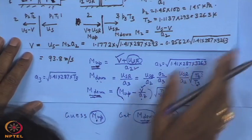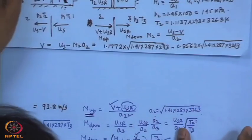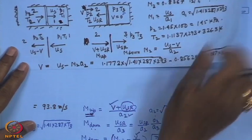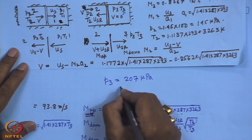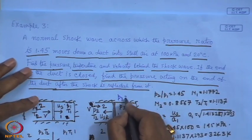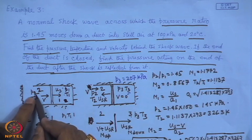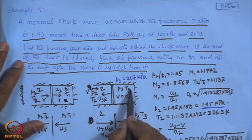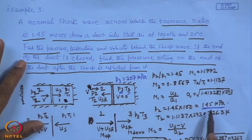Using this iterative procedure, the result is P3 = 207 kPa. So the sequence is: initially 100 kPa, after the incident shock 145 kPa, and after the reflected shock the pressure acting on the closed end is 207 kPa. The key is to set the problem in the shock's reference frame, making the shock stationary, then apply the normal shock equations.